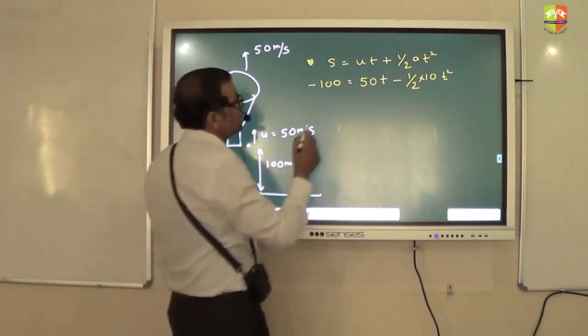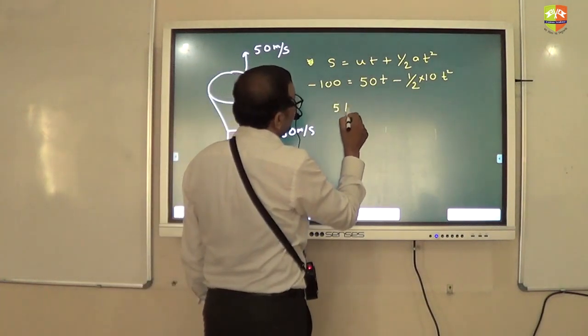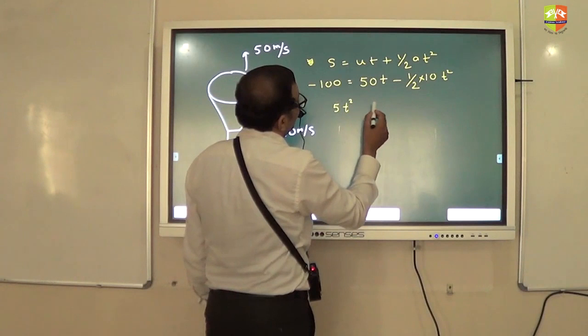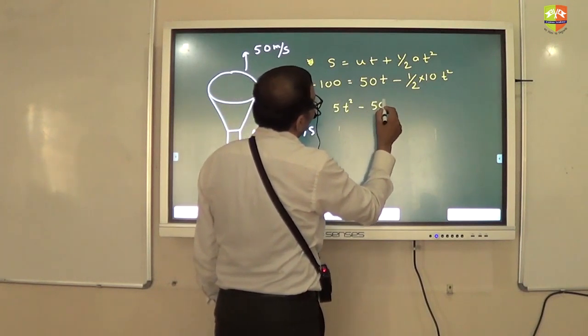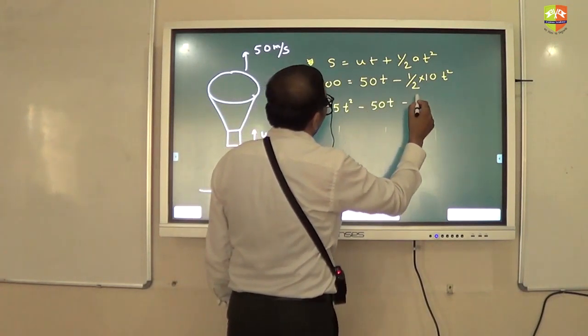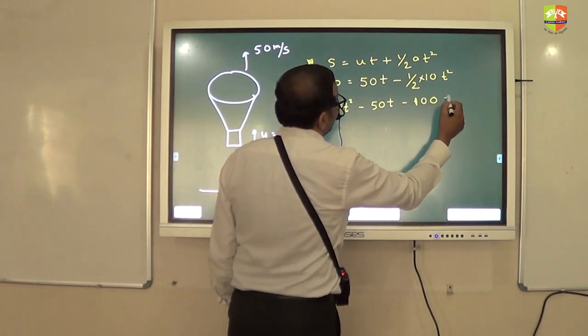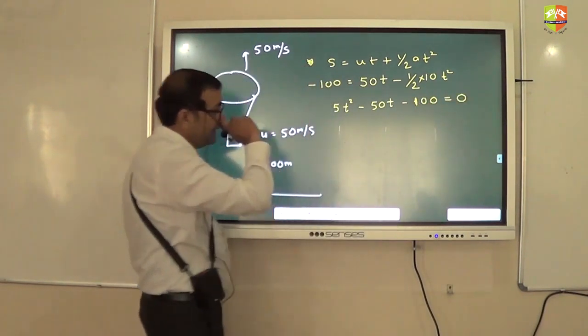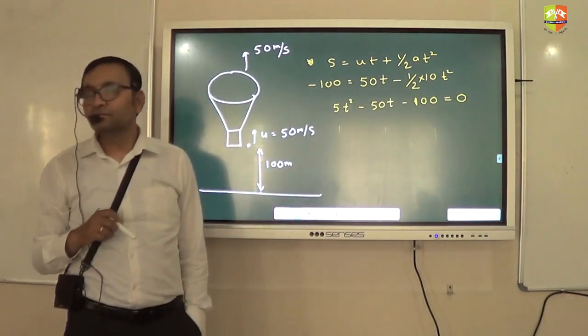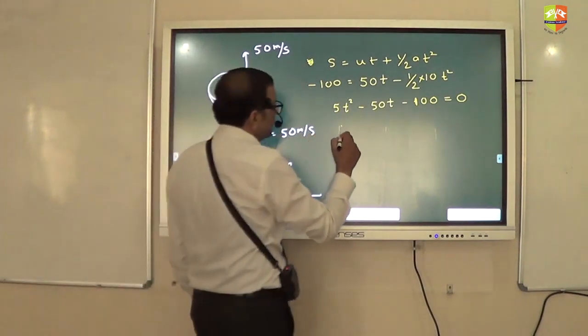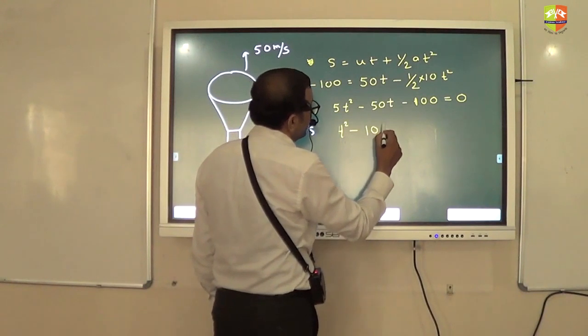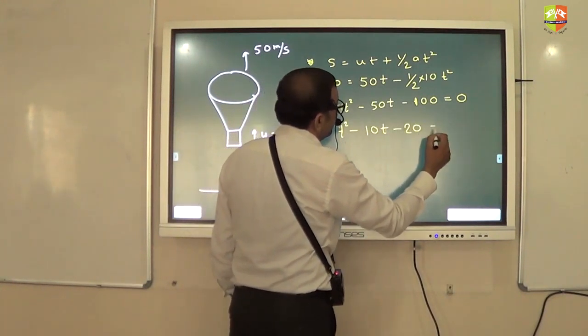Okay, so you will have 5t square and minus 50t minus 100. Have you learnt the factorization? Let's first simplify this. This will be t square minus 10t minus 20 is equal to 0.